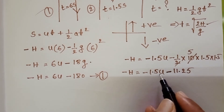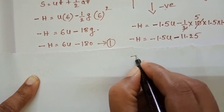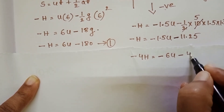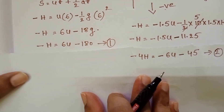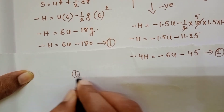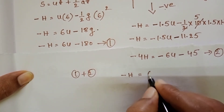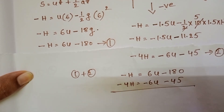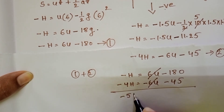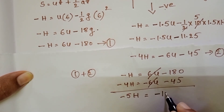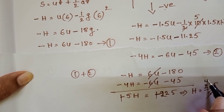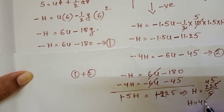To eliminate U, multiply the second equation by 4: −4H = −6U − 45. This is Equation 2. Adding Equation 1 and Equation 2: −H = 6U − 180 and −4H = −6U − 45. The U terms cancel, giving −5H = −225. So H = 225/5 = 45 metres.